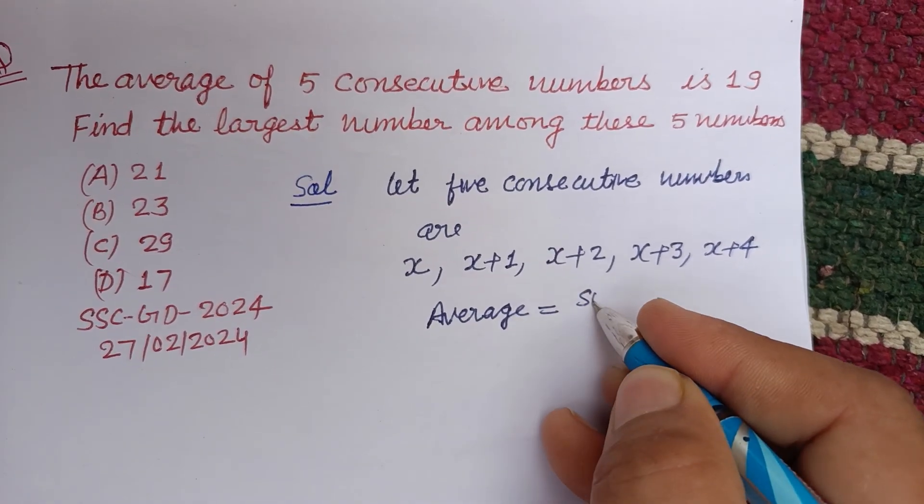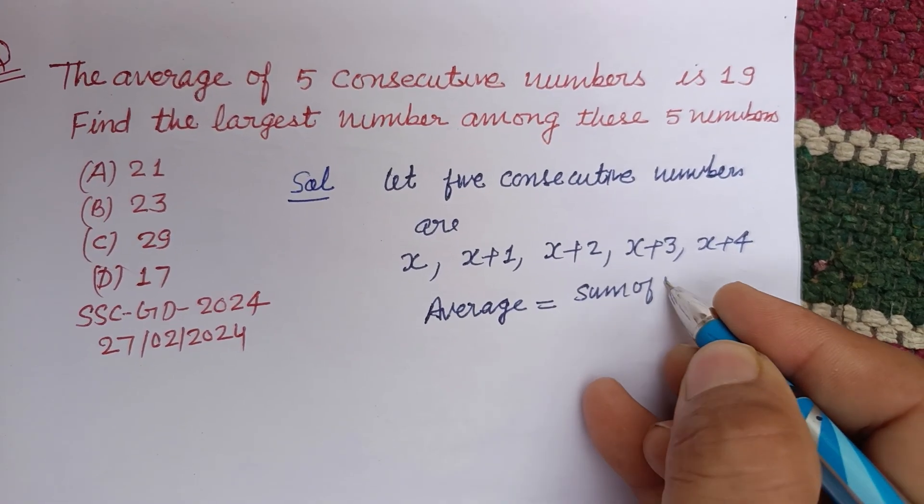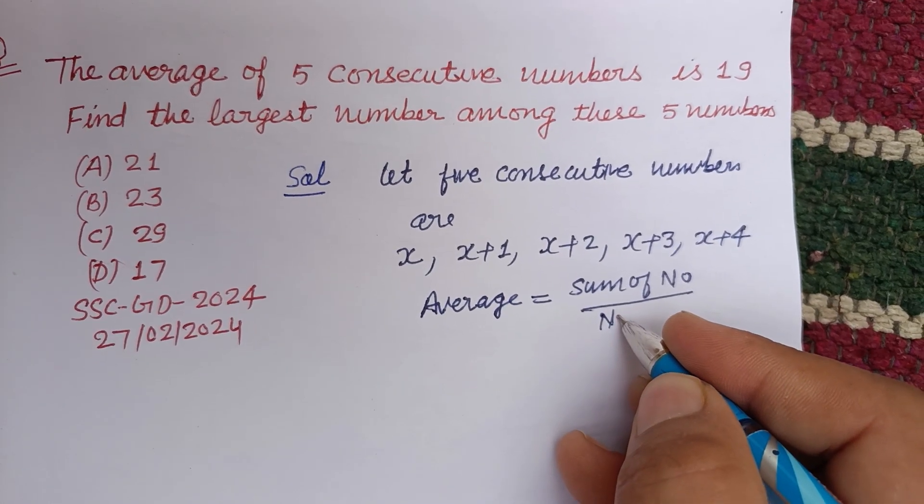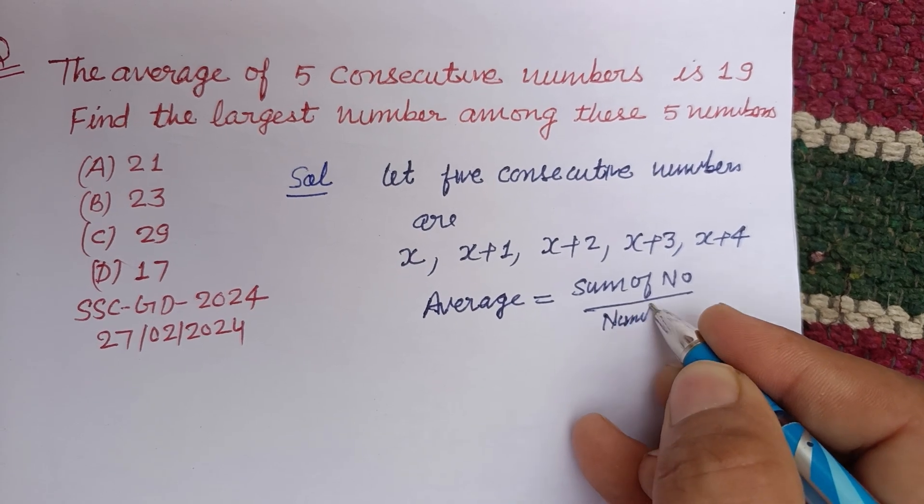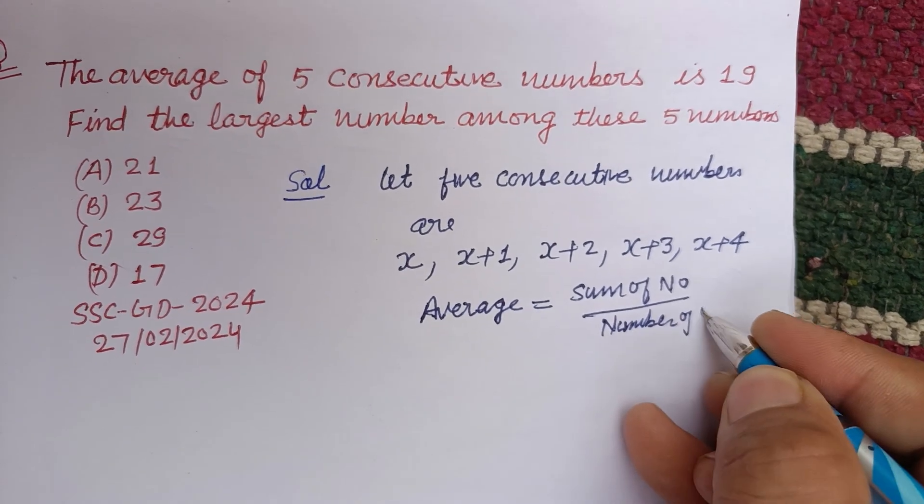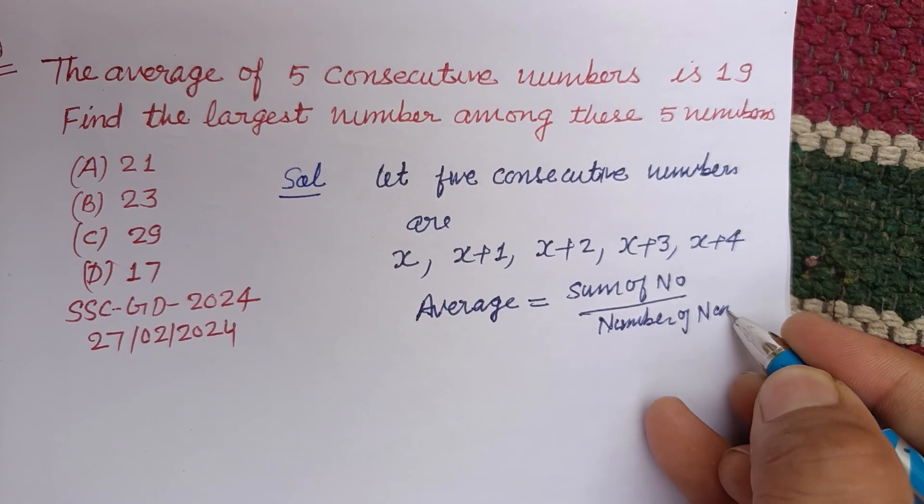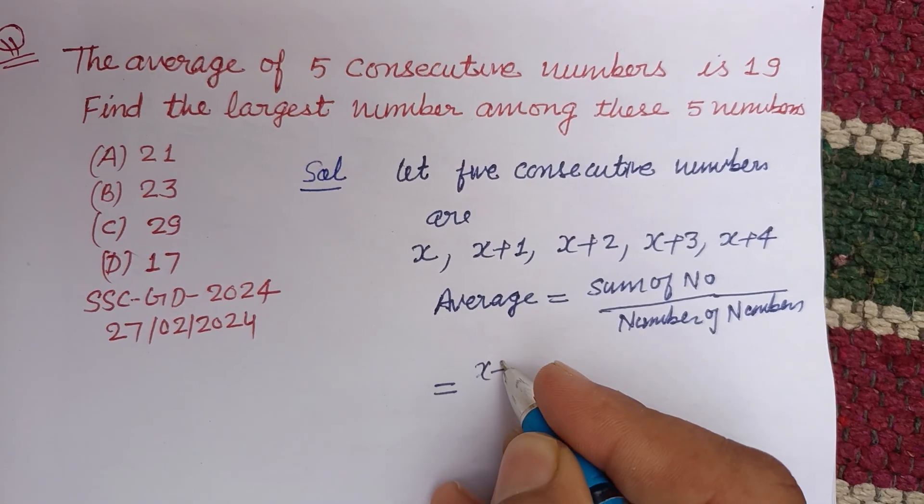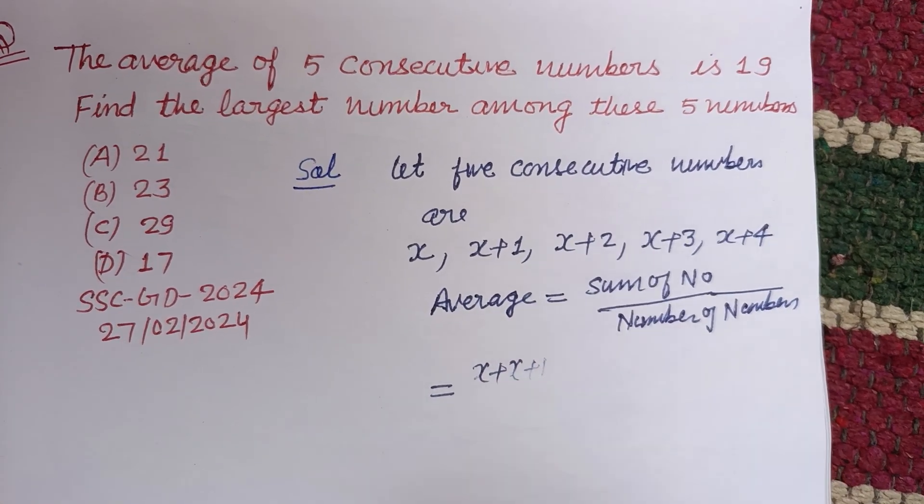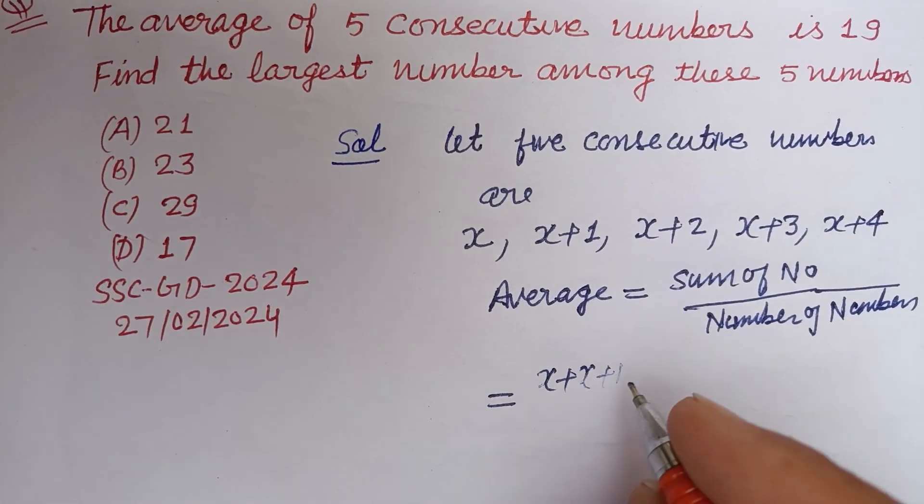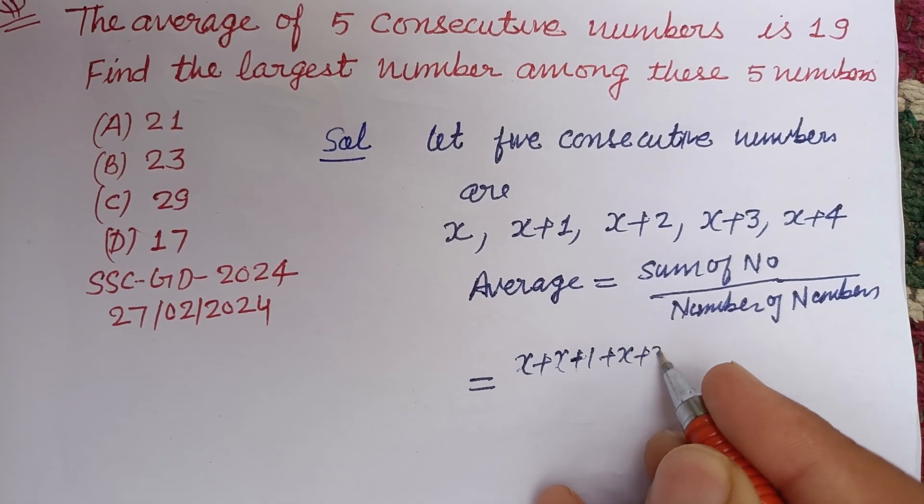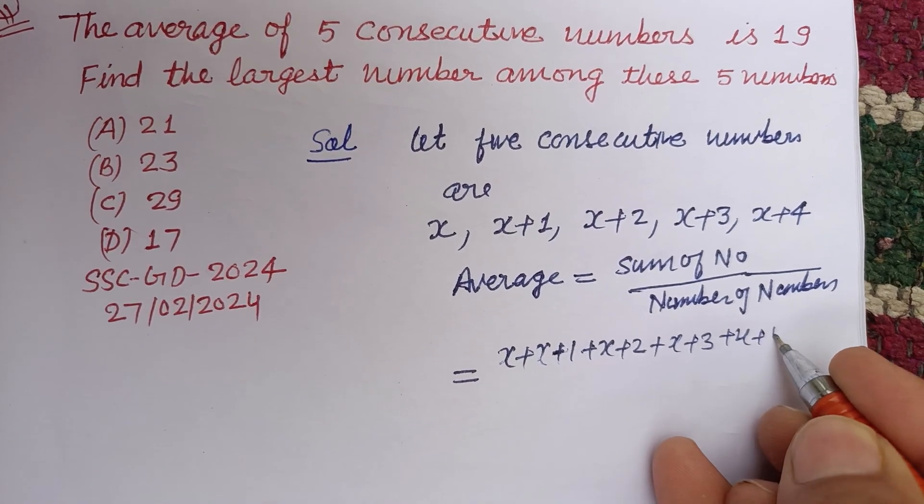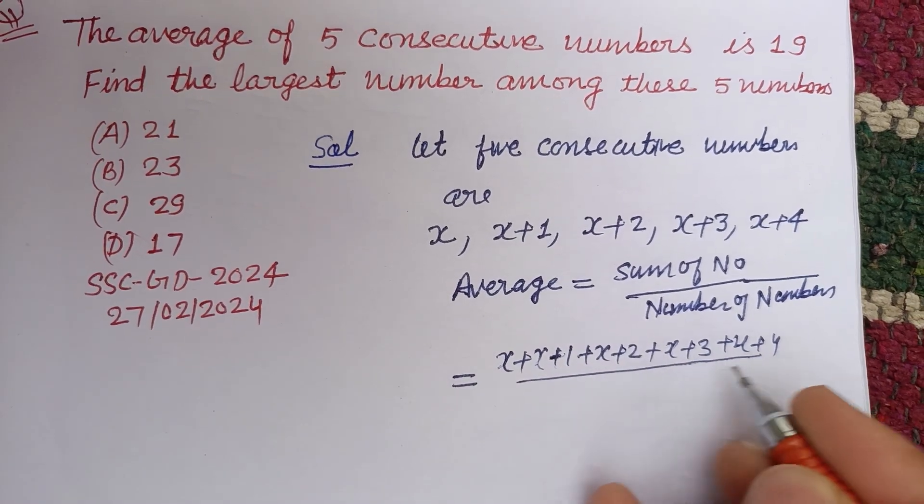Average equals sum of numbers over number of numbers. So sum of numbers is x plus x plus 1 plus x plus 2 plus x plus 3 plus x plus 4, upon 5. These numbers are 5, so divide by 5, is given to us as 19.